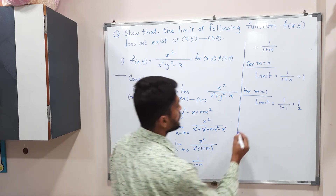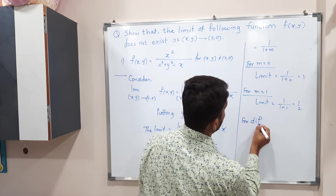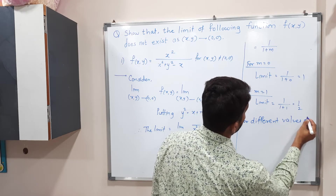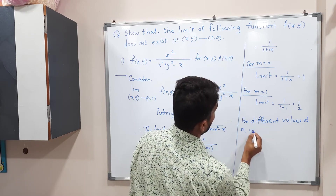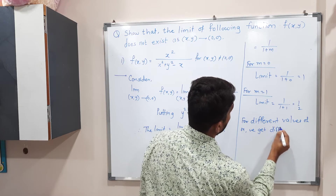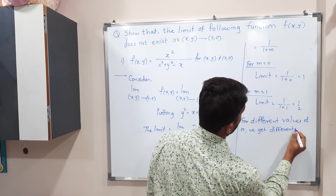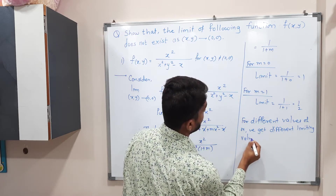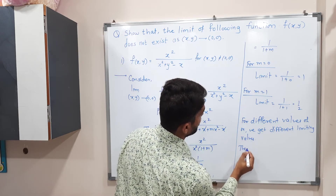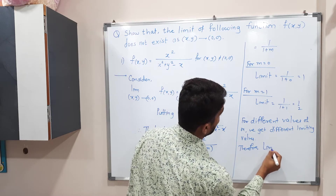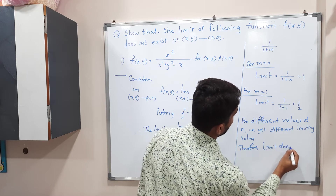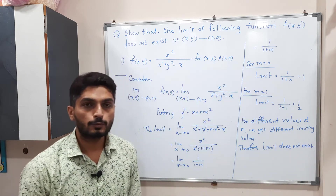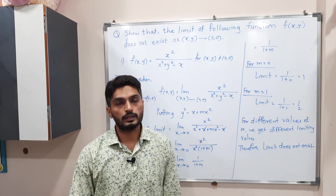Since we are getting multiple answers for different values of m, we declare that the limit does not exist. For different values of m we get different limiting values, therefore the limit does not exist. Make a screenshot of this and after that we will solve one more example.